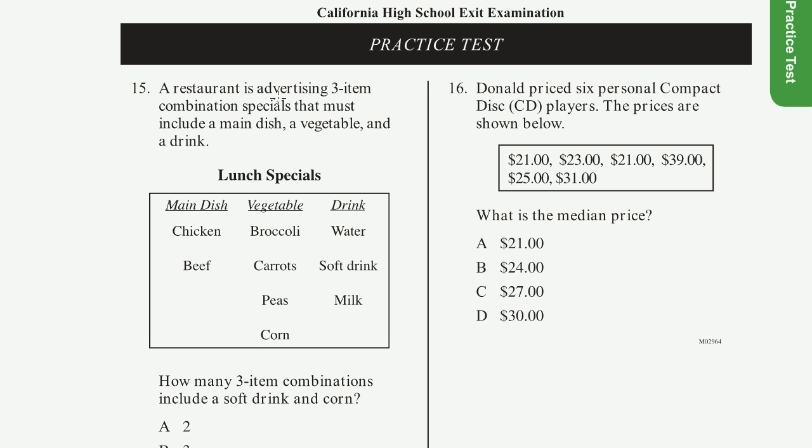Problem 15. A restaurant is advertising three item combination specials that must include a main dish, a vegetable, and a drink.